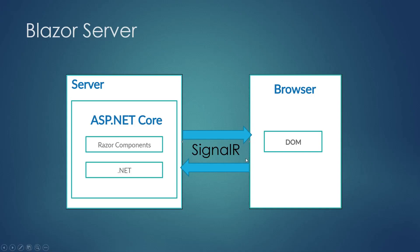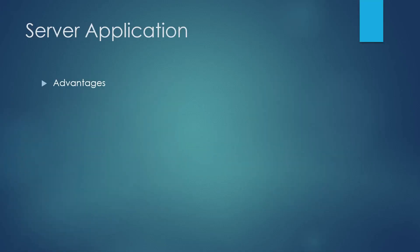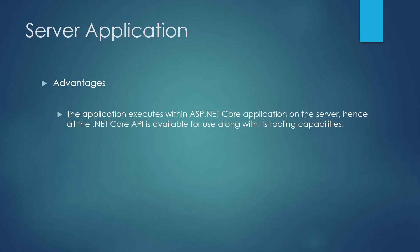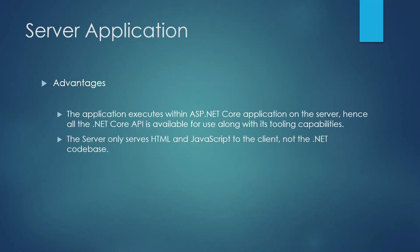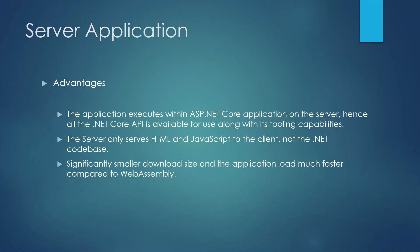The advantages of a Blazor Server application: first, since the application executes on the server as an ASP.NET Core application, the user has access to all the .NET code APIs as well as all the .NET tooling capabilities. Second, the server only serves HTML and JavaScript files — none of the .NET code base is served to the browser. Another advantage is that the download size of this type of application is pretty small compared to a WebAssembly application, as the whole application is not served at once — only the requested pages are served.